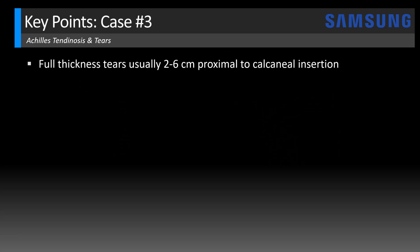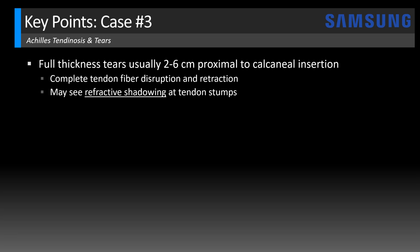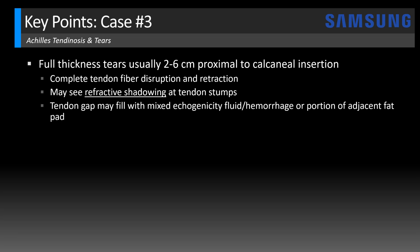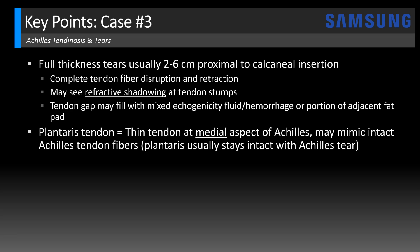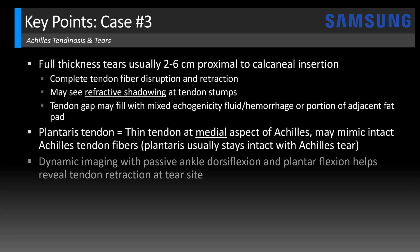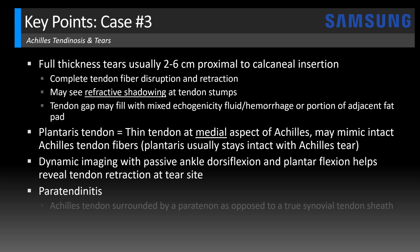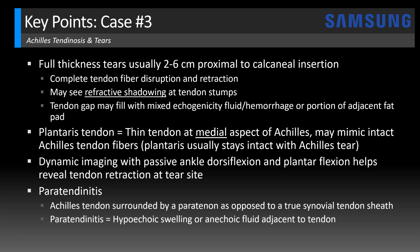Full thickness tears usually occur two to six centimeters proximal to the calcaneal insertion, and you'll see complete tendon fiber disruption with retraction. You might also see refractive shadowing at the tendon stumps. The tendon gap may fill with mixed echogenicity fluid or hemorrhage, or even a portion of adjacent fat pad as we had in this case. The plantaris tendon is a thin tendon at the medial aspect of the Achilles that can mimic intact Achilles tendon fibers — the plantaris usually stays intact with Achilles tear, so don't be fooled. The plantaris is absent in about 20% of patients. Dynamic imaging with passive ankle dorsiflexion and plantar flexion can be very helpful, revealing tendon retraction. The Achilles tendon is surrounded by a peritenon as opposed to a true synovial tendon sheath, so think about peritendinitis when you see hypoechoic swelling or anechoic fluid adjacent to the tendon.